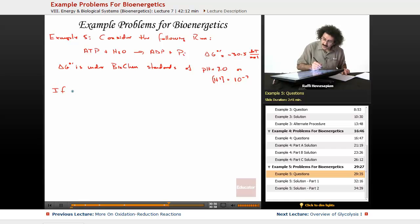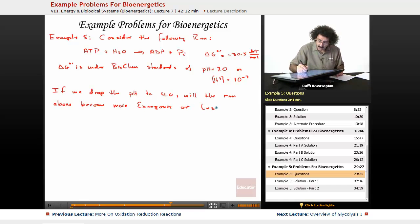Now, here is our question. If we drop the pH to 4.0 from 7.0, in other words, if we make this environment more acidic, pH to 4.0, our question is, will the reaction above become more exergonic or less exergonic?